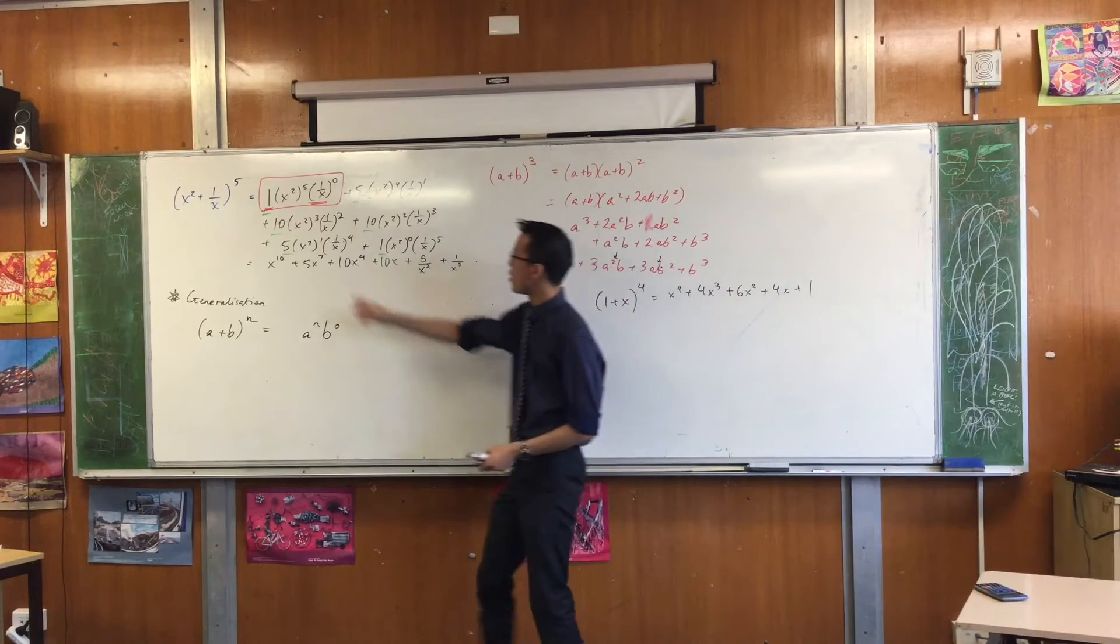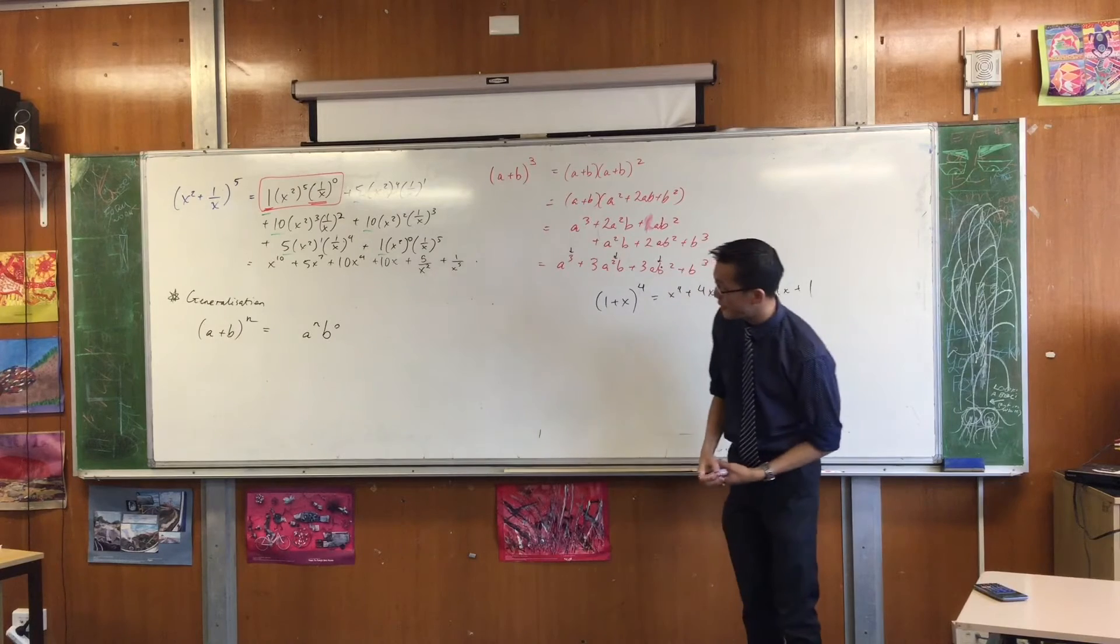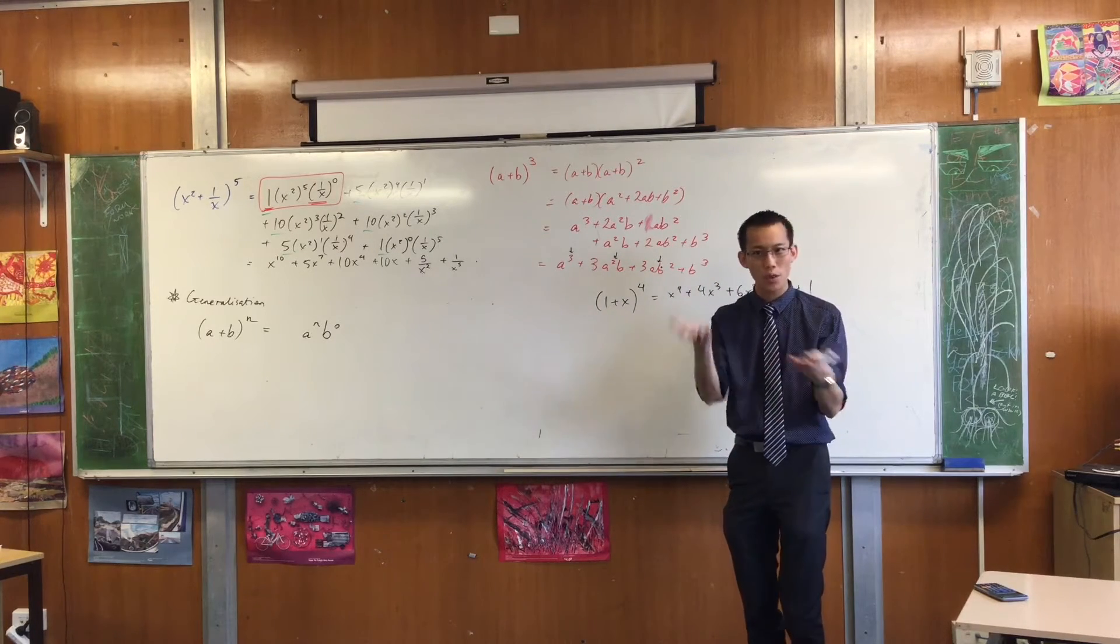Then, secondly, I need to know, why is it one, five, ten, ten, five, one? Why is it not one, six, fifteen, twenty, fifth? Why is it not that one? How did I know which row to pick?